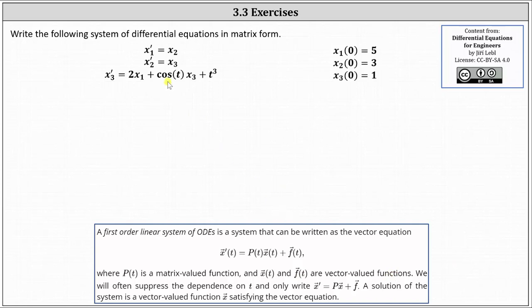It might be helpful to rewrite the equations so all equations contain the variables x1, x2, and x3. Let's go ahead and do that. For the first equation, we have x1 prime equals 0x1 plus 1x2 plus 0x3. For the second equation, we have x2 prime equals 0x1 plus 0x2 plus 1x3, and x3 prime is equal to 2x1 plus 0x2 plus cosine t x3 plus t cubed.